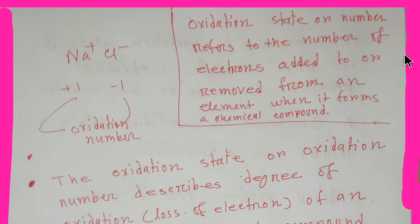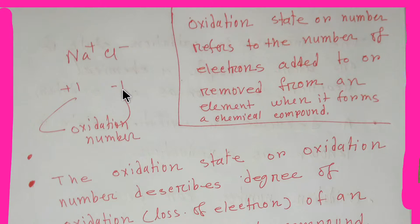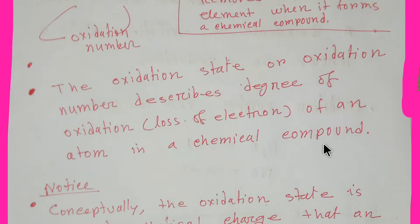Electrons are removed from the element sodium, and electrons are added to the element chlorine, when they form the chemical compound sodium chloride. The oxidation state of sodium is plus one and the oxidation state of chlorine is negative one.